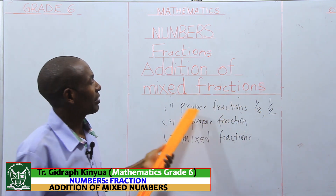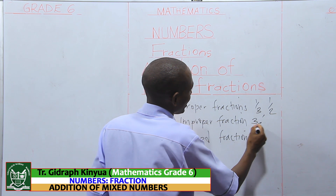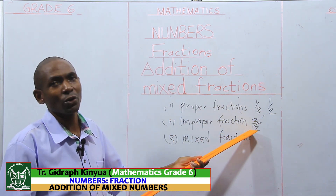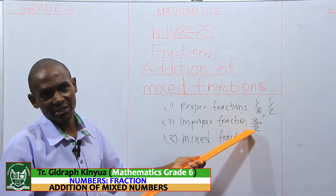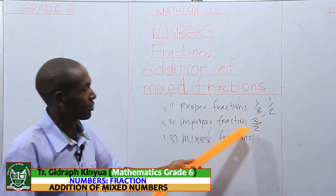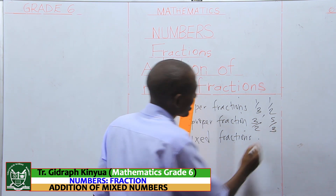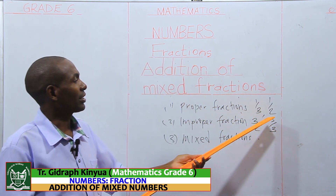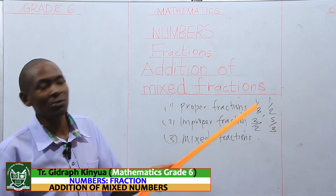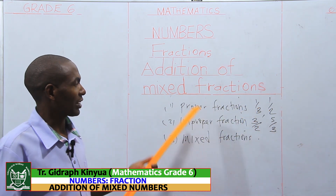When it comes to improper fractions, the denominator is less. So three out of two, or three halves — the numerator is more than the denominator. We also have five thirds, where the numerator is more than the denominator. You can give me more examples of improper fractions.